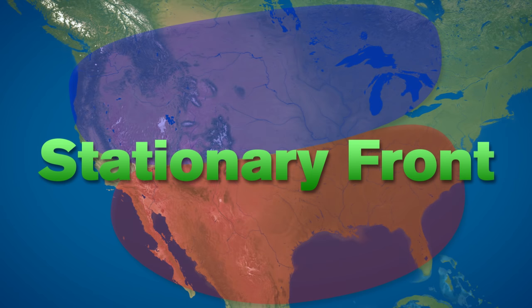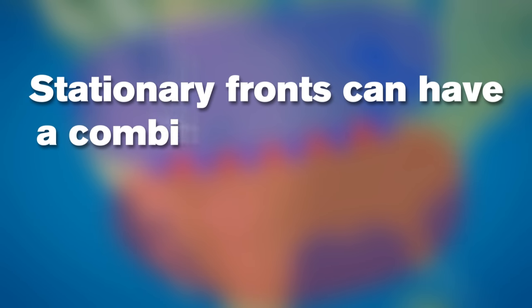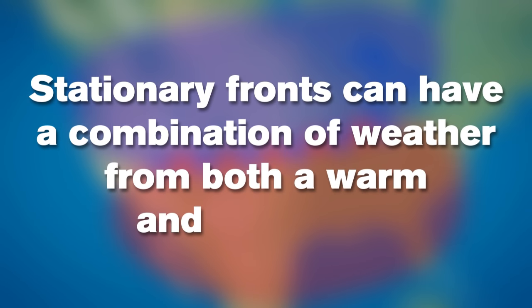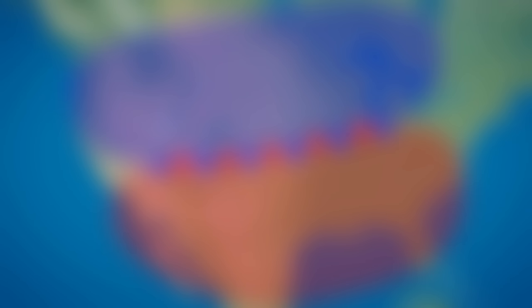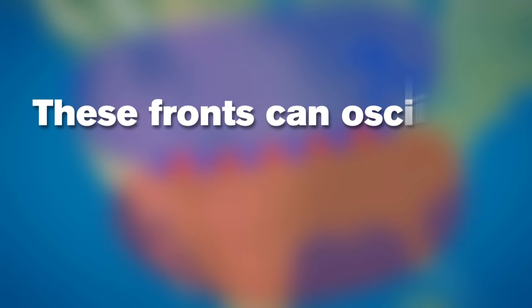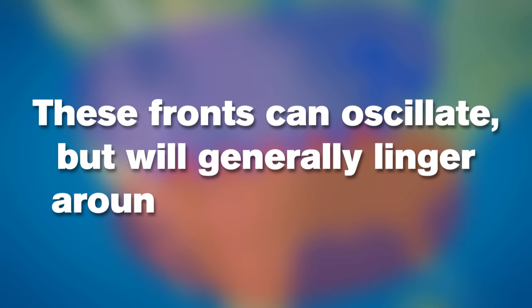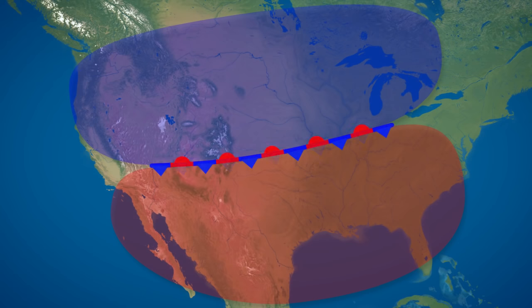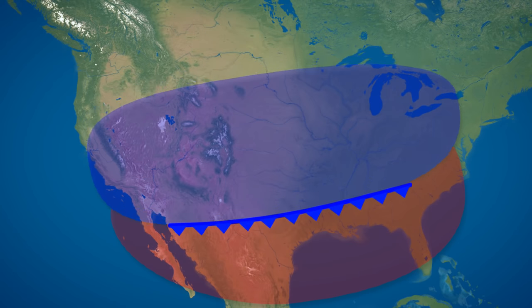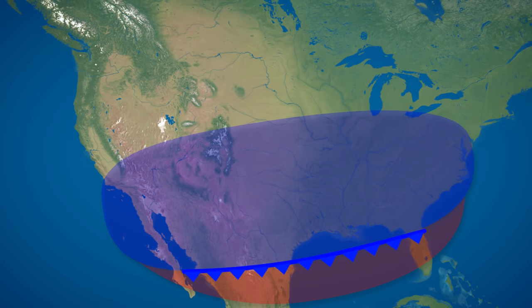A stationary front occurs when two air masses meet but neither one moves the other out of the way. Stationary fronts can have a combination of weather from both a warm and cold front. These fronts can oscillate, but will generally linger around for several days before one of the air masses pushes the other air mass out of the way.